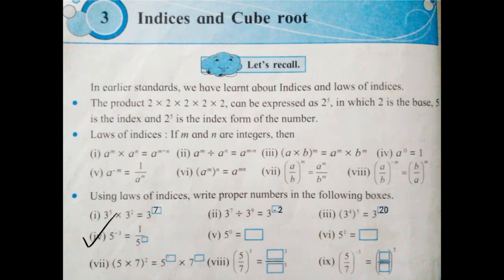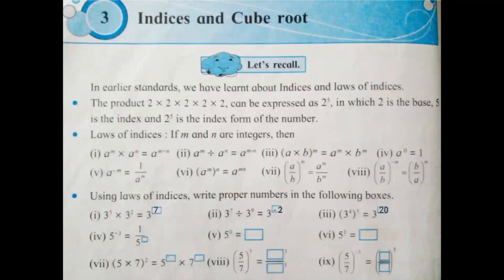Next: 5 raised to minus 3 is equal to 1 upon 5 raised to box. The formula is A raised to minus M is equal to 1 upon A raised to M. If there is a base and a negative index, to make the index positive, you have to take the numerator 1. That is 5 raised to minus 3 is equal to 1 upon 5 raised to 3.